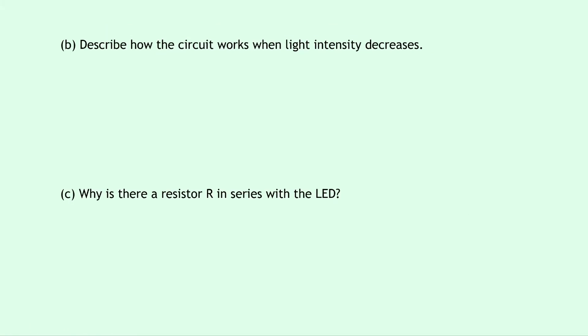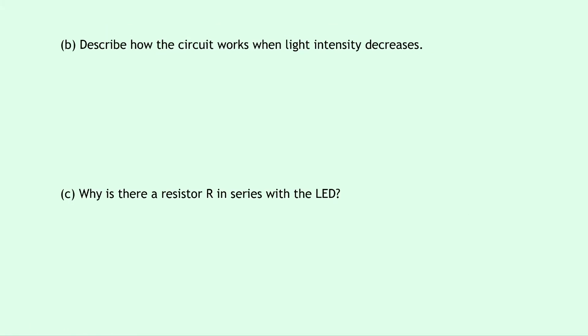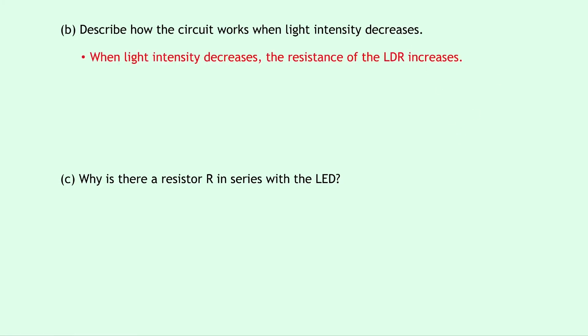Part B says to describe how the circuit works when light intensity decreases. To start we need to think about the rule for LDRs which is LURD — as light intensity goes up, resistance of the LDR goes down. So in this case, when light intensity decreases, it must be the opposite: the resistance of the LDR increases, and this causes the voltage across the LDR to increase, because resistance and voltage are directly proportional.